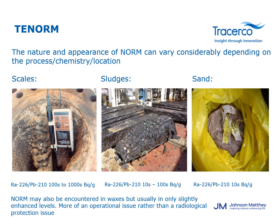The nature and appearance of NORM can vary considerably depending on the location and process. NORM may appear as not only scales and thin deposits, but also sludges, sands, waxes and be present in produced water. In terms of the specific activity or activity concentrations encountered, this can also vary significantly for reasons already mentioned. Typical values of NORM found in the North Sea are illustrated below each photo.